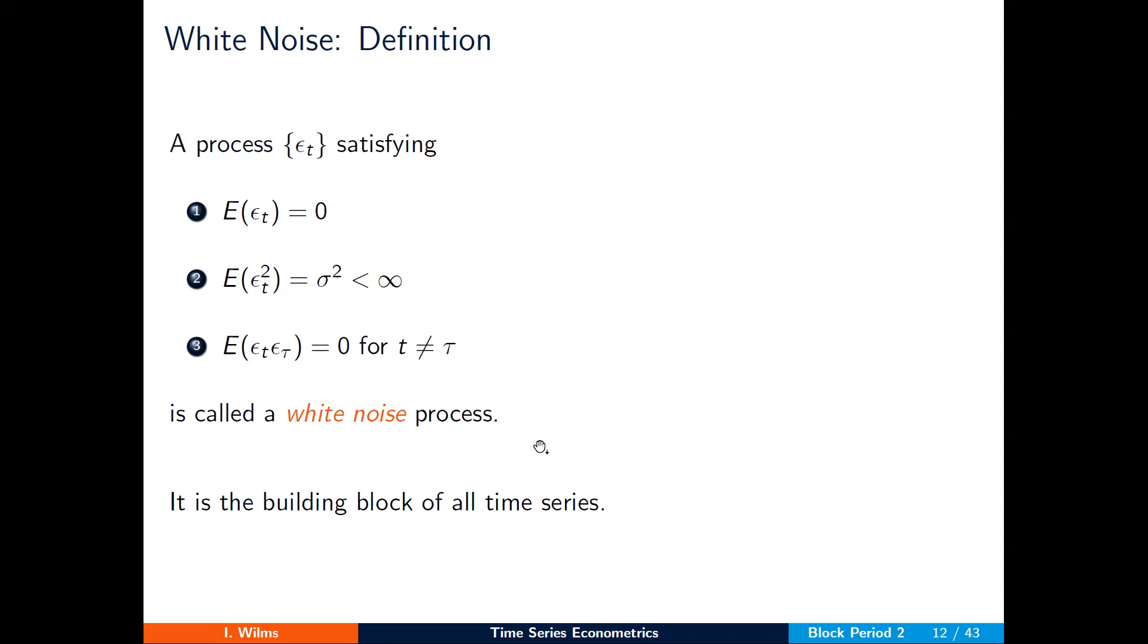A white noise process does clearly satisfy all properties of a weakly stationary time series, but it is much stronger, since property three rules out any time dependence. In essence, a sample from a white noise process corresponds to a collection of t iid distributed variables.